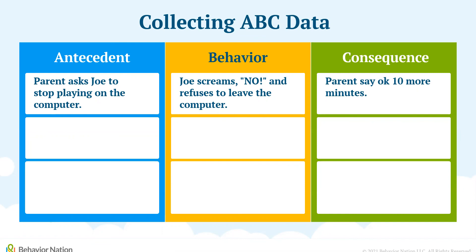Okay, let's check to see if you got it correct. Your antecedent would be when Julia asked mom for a cookie and mother stated, not until after dinner. Your behavior is Julia shouting, give me cookie now. Your consequence is mother giving Julia the cookie.